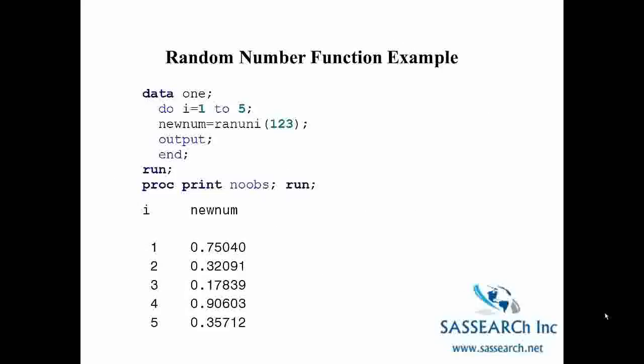Here's a simple program that uses this random number function. So here we are creating a data set called one and we're going to iterate through this data step 5 times and create a variable newNum which is equal to RANUNI of 123. So that's our seed and we have an output statement so that each time SAS iterates through the loop, it's going to output an observation. And so you see we have a printout of our 5 observations which are a list of random numbers and each number is between 0 and 1.